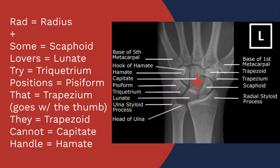From the radial styloid process, remember this mnemonic: 'Some Lovers Try Positions That They Cannot Handle.' Starting from true anatomic position, the left marker indicates moving from the proximal lateral row of the carpal bones. The scaphoid is the proximal-most lateral carpal bone, and progressing toward the medial aspect: scaphoid, lunate, triquetrum, pisiform.